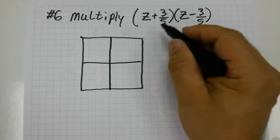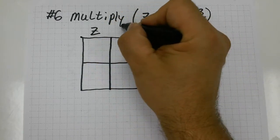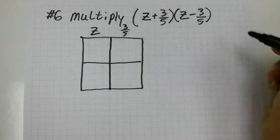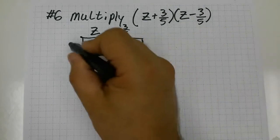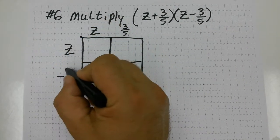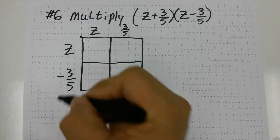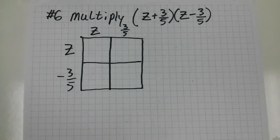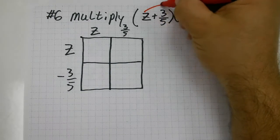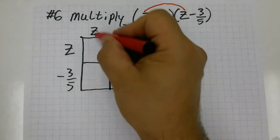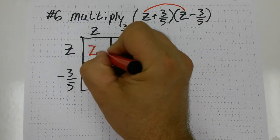All I'm going to do is stack this z plus 3 fifths on the top and the z minus 3 fifths on the vertical. And then what I'm going to do is basically FOIL it. So z times z first. That's z times z here. That gives me z squared.